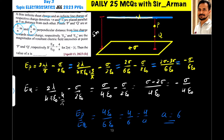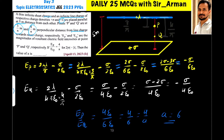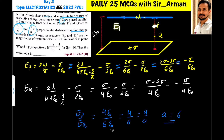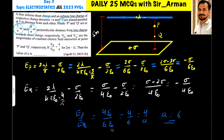In this picture, this is our line charge. From this line charge, point P is located at a distance of 3 by pi meter and point Q is located at a distance of 4 by pi meter. At point P the electric field is EP and at point Q the electric field is EQ — that is, EP is the resultant field due to both the line charge and the plane charge.